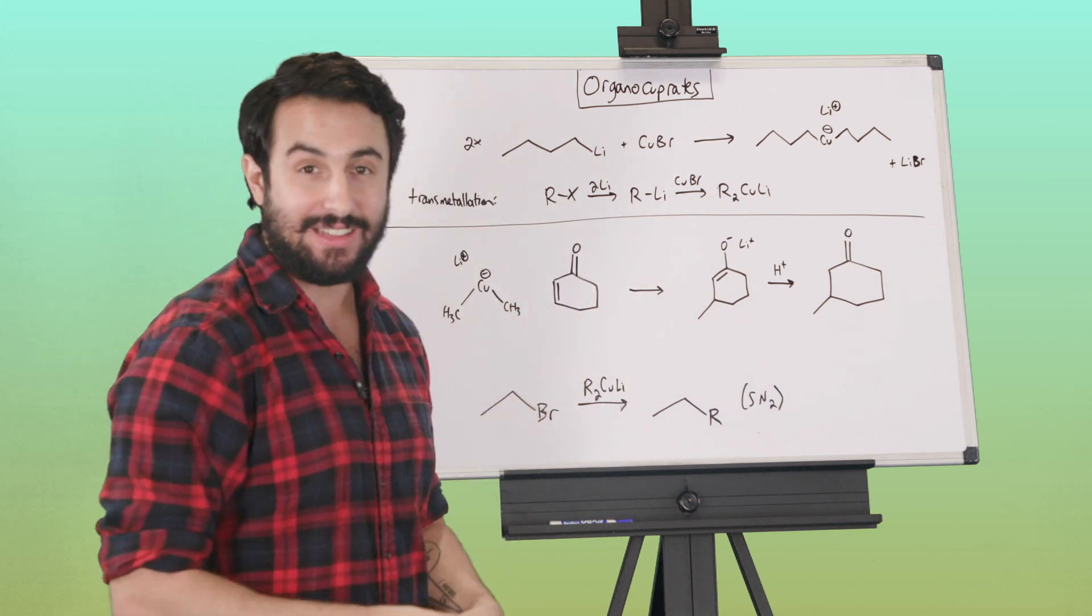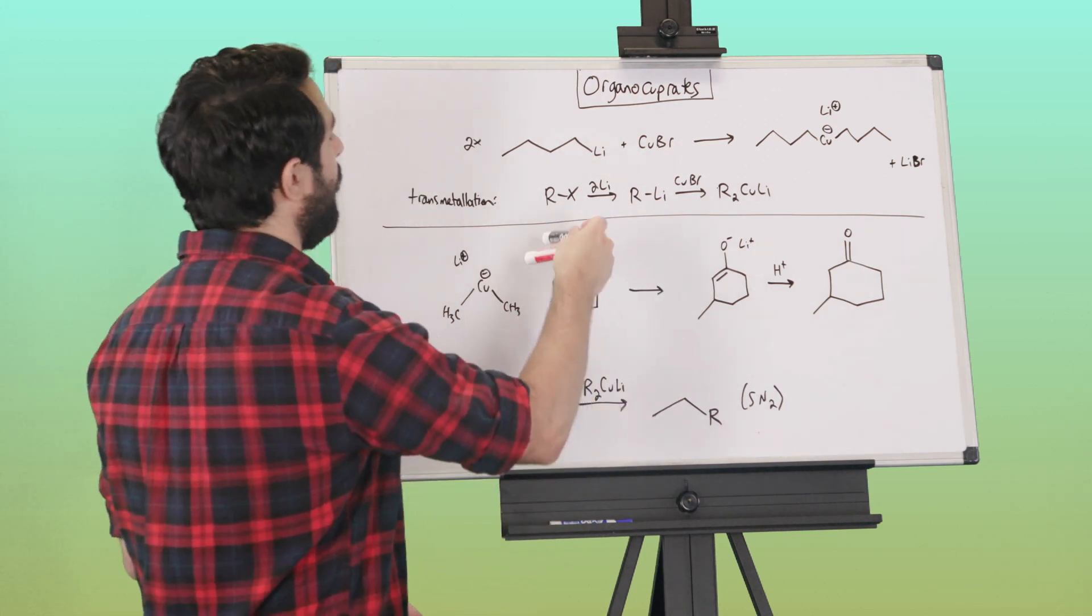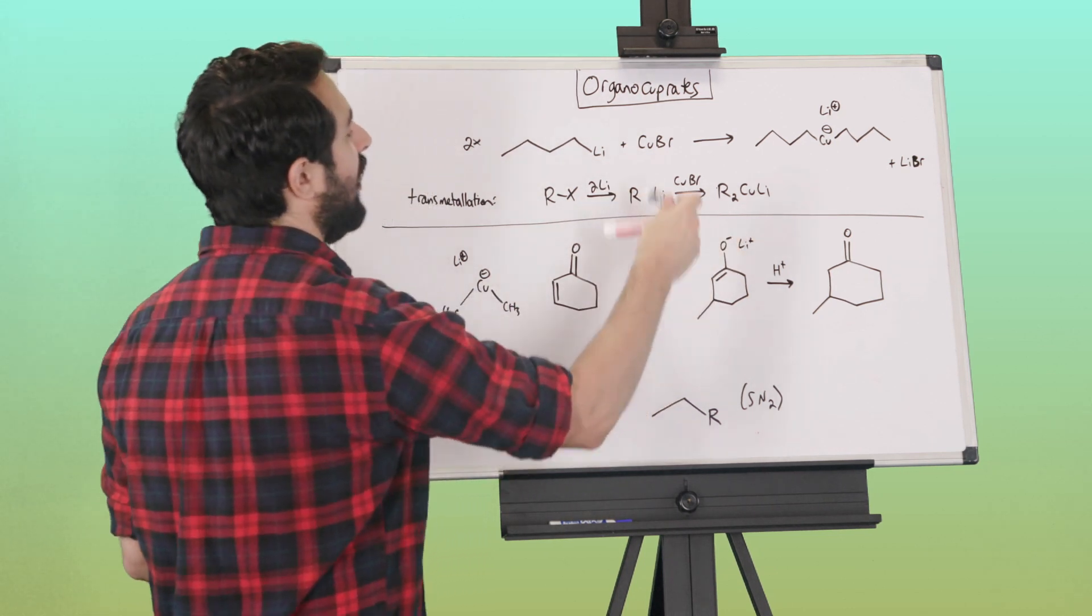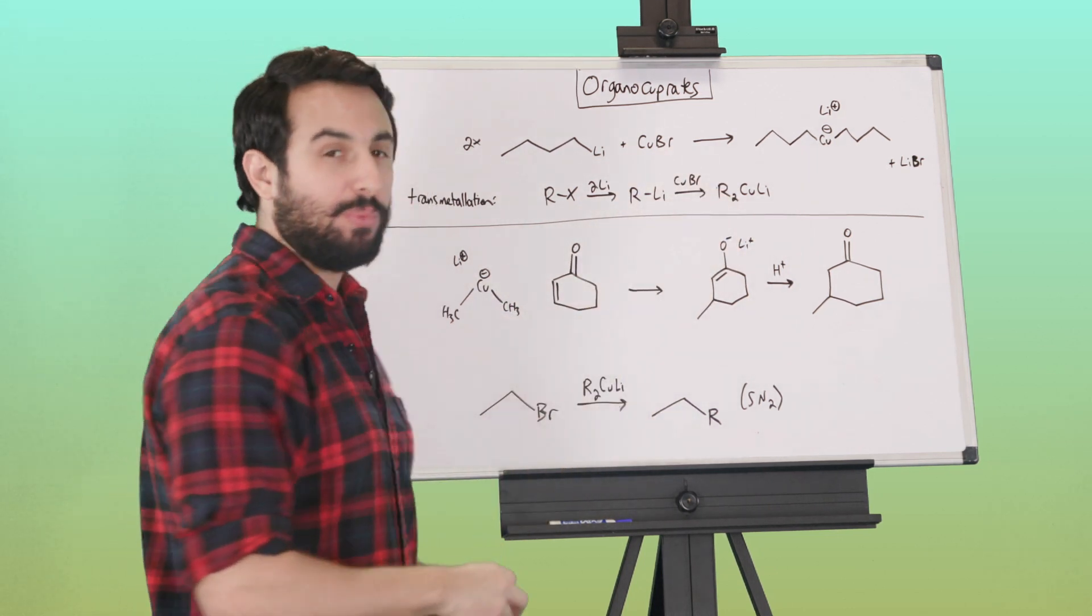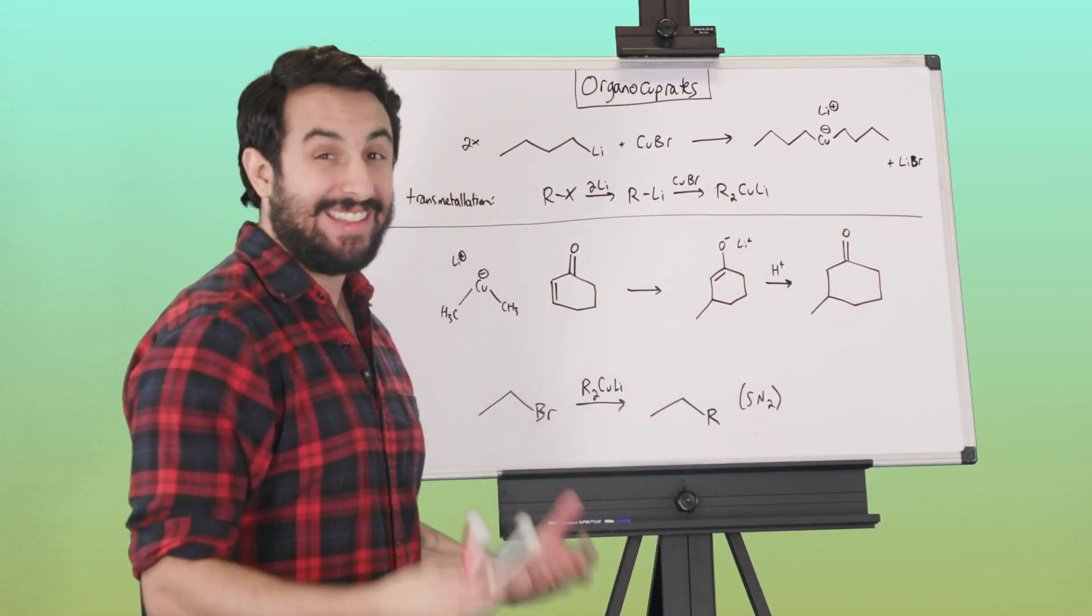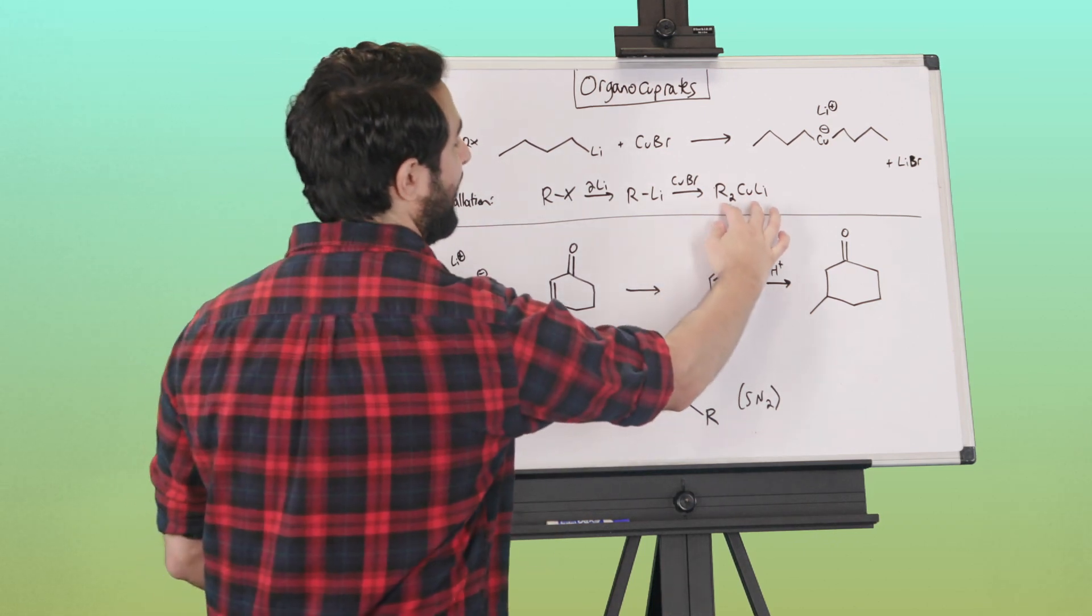The whole thing, if we wanted to start from an alkyl halide, remember we could do what we learned before: reacting the alkyl halide with lithium, we get the organolithium reagent, and then as we just said, reacting with copper bromide is going to give us our organocuprate, also known as a Gilman reagent.